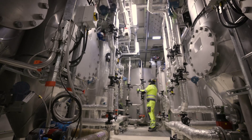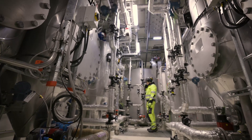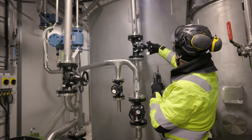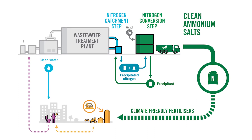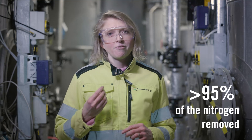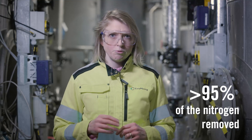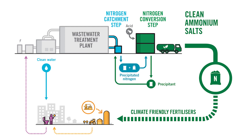Aqua 2M is a two-step process. First, the nitrogen is removed from the wastewater by adding a precipitant — magnesium phosphate — that catches the nitrogen in the water. We thereafter separate the precipitated nitrogen from the treated water. The treated water is led back to the wastewater treatment plant again with more than 95% of the nitrogen removed. In the second step, sulfuric acid is added to split the nitrogen from the precipitant.